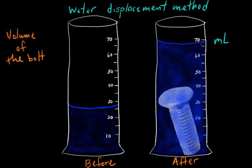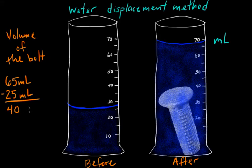The volume of the bolt would equal what we have afterwards, which is 65 milliliters, minus our before amount of 25 milliliters. So our final volume for this bolt, we can say the bolt is 40 milliliters, takes up 40 milliliters of space.